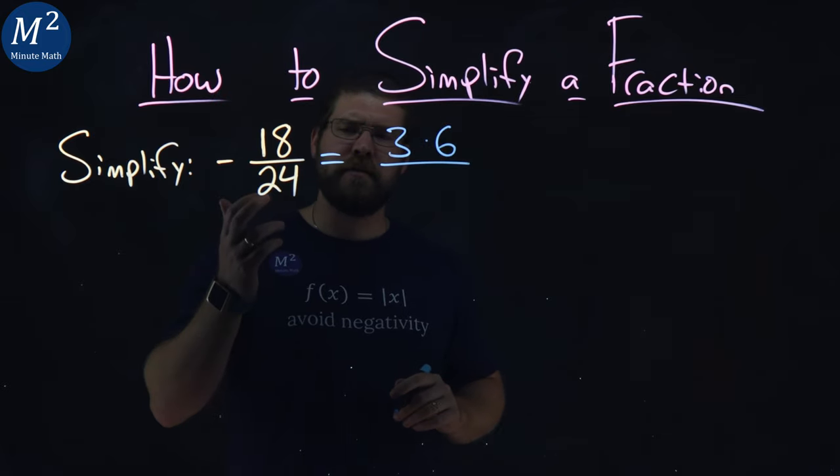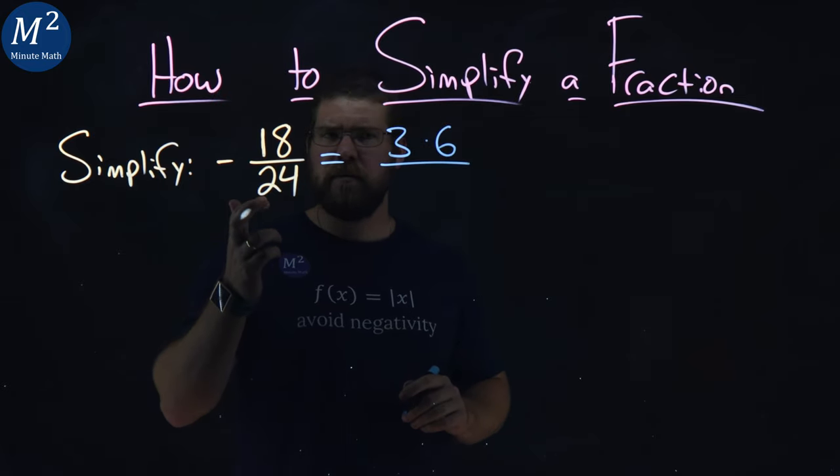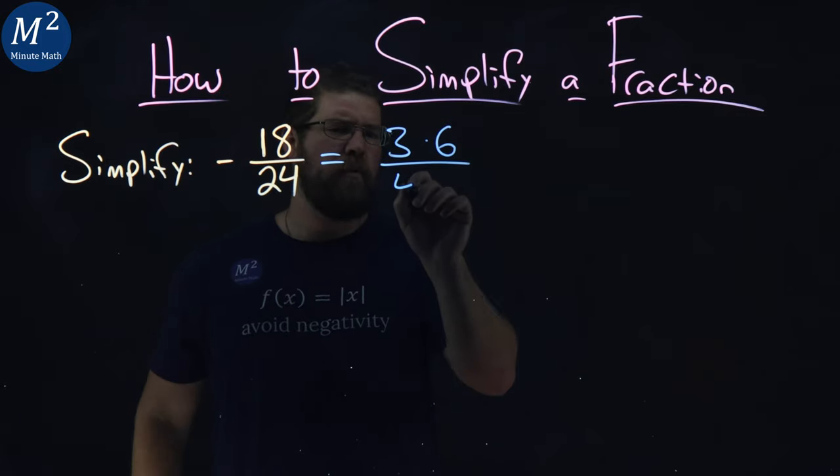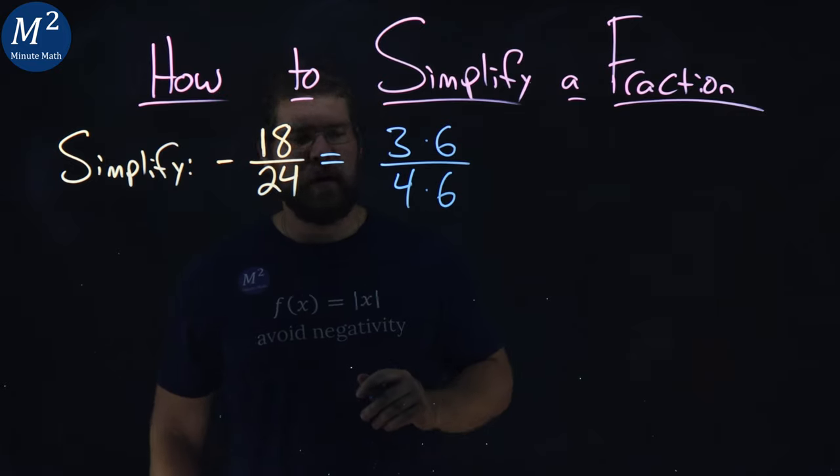Now, the denominator is, well, can I find a 6 in there? 4 and 6, right? 4 times 6 gives me a 24.